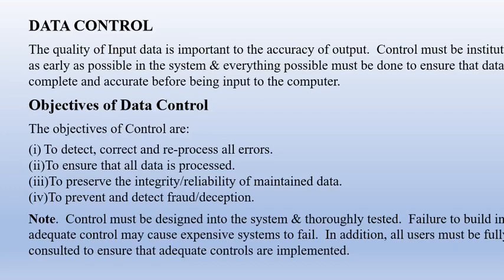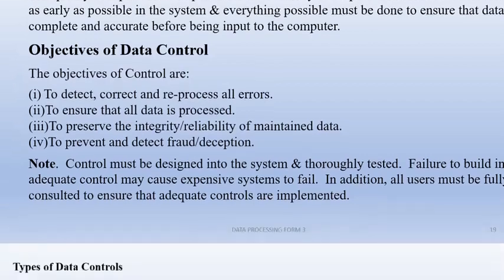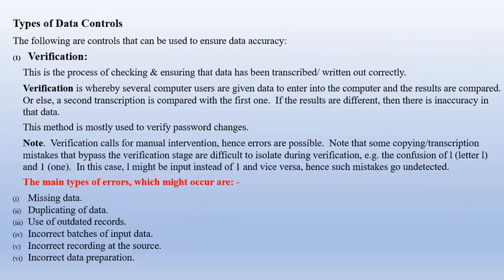The quality of input data is important to the accuracy of output. Control must be instituted as early as possible in the system. Objectives of data control: to detect, collect, and reprocess all errors; to ensure that all data is processed; to preserve the integrity and reliability of maintained data; and to prevent and detect fraud or deception. Types of data controls include verification and manual controls.